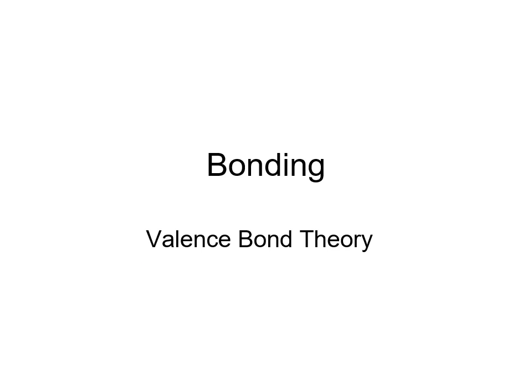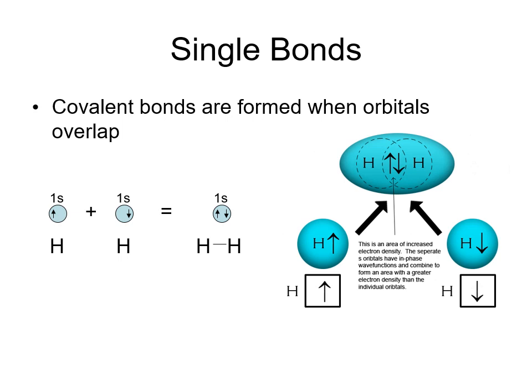We're going to cover valence bond theory — not the only explanation for how molecules bond, but a pretty good one. With valence bond theory, single bonds, double bonds, and triple bonds — essentially any covalent bond — are thought of as being formed when orbitals overlap. If you have a hydrogen with one electron in its 1s orbital and another hydrogen with another electron in its 1s orbital, when they bond they share that orbital, putting one electron from each atom into it, becoming more stable and forming the bond we represent with a single line in Lewis diagrams.